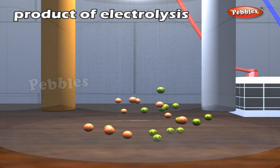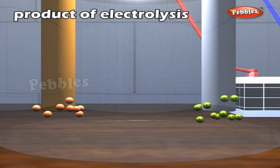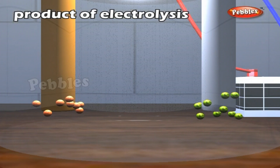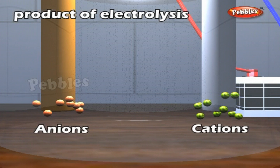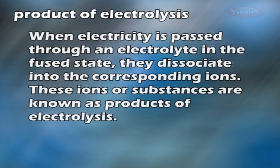Products of Electrolysis: The process by which an electrolyte, either in molten or dissolved state, splits up into charged particles — namely cations and anions — is termed ionization. When electricity is passed through an electrolyte in the fused state, they dissociate into the corresponding ions, known as products of electrolysis.